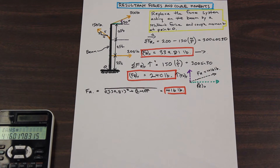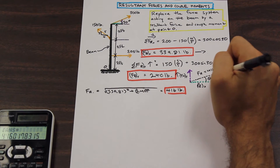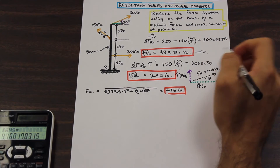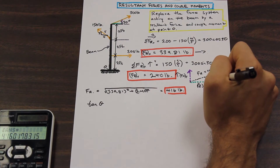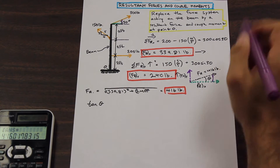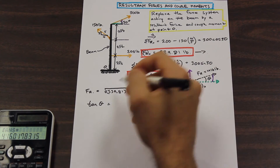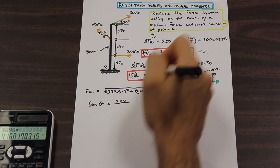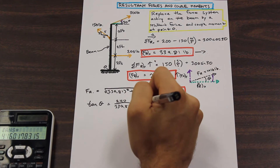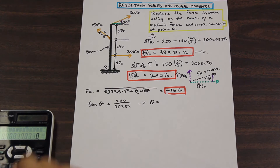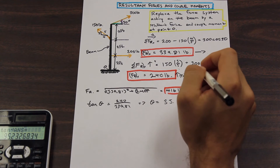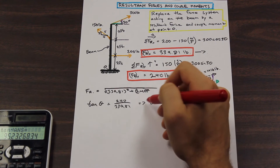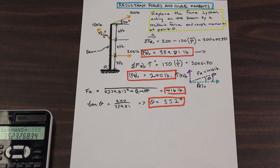We also need to find the direction theta. Like we did before, we use trigonometry — opposite over adjacent. Our y component (240) is the opposite side, and our x component (339.81) is the adjacent side. Taking the inverse tangent of 240 divided by 339.81 gives us theta equal to 35.2 degrees, measured from the x-axis. So we've found the resultant force of these three forces.